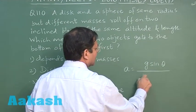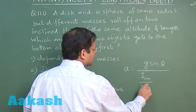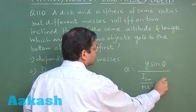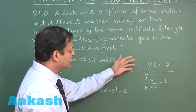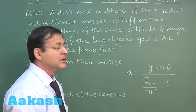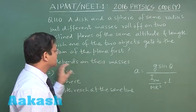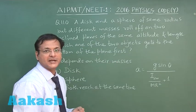This is a kind of question in which acceleration will be coming into picture. Acceleration is g sin θ upon (I_cm/mr² + 1). You see moment of inertia about the center of mass will be involving mass, so ultimately mass will be cancelling out. Here if the first option says that it depends on their masses, this is not the correct option.